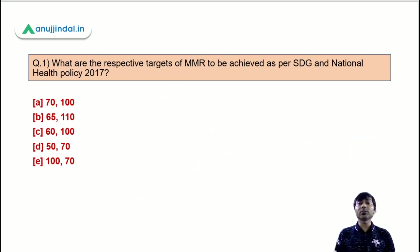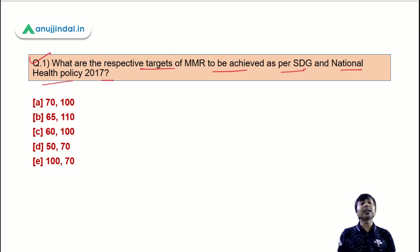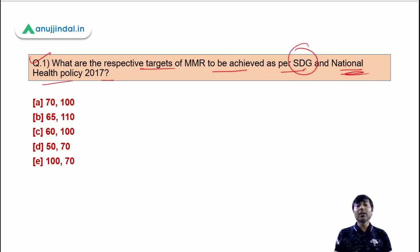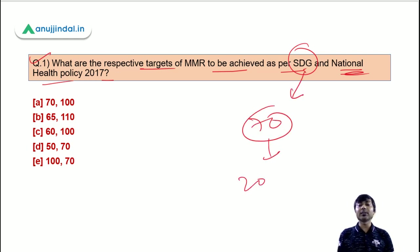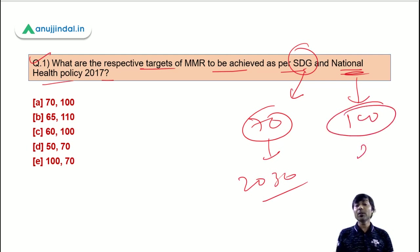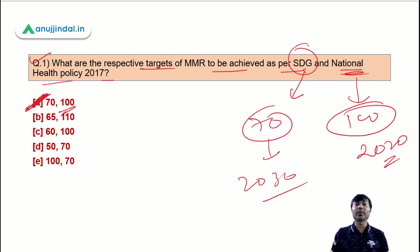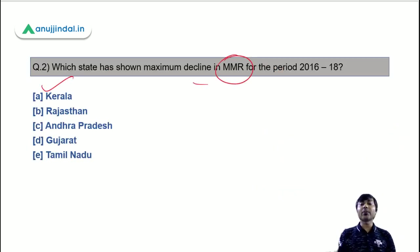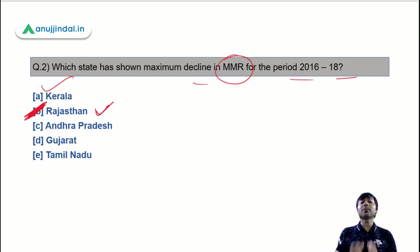There are three questions based on this news. Question 1: What are the respective targets of MMR as per SDG and national health policy? Answer: As per SDG the target is 70 by 2030, and as per national health policy it is 100 by 2020 — so option A, 70 comma 100. Question 2: Which state has shown maximum decline in MMR for the period 2016-18? Answer: Rajasthan. Question 3: Which state has not achieved the SDG target? Answer: Option E — Gujarat — as the five states that achieved it are Kerala, Maharashtra, Tamil Nadu, Telangana, and Andhra Pradesh.